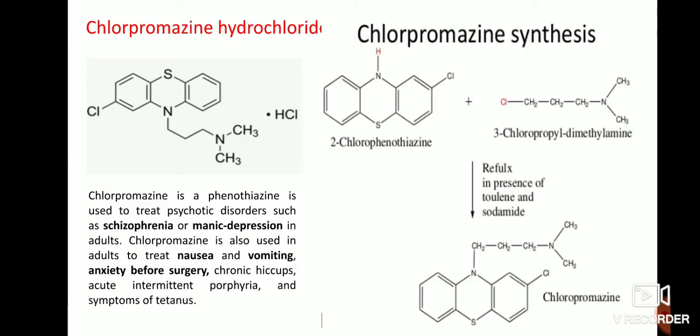Next is the synthesis of chlorpromazine hydrochloride. It is mainly used to treat schizophrenia or manic disorders, and also used to treat nausea, vomiting, and anxiety before surgery. For the synthesis, 2-chlorophenothiazine is treated with 3-chloropropyl dimethylamine under reflux conditions.